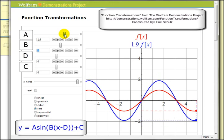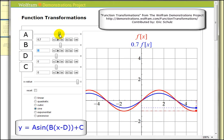As we see A decrease less than one, this will be a vertical compression, as we see here.